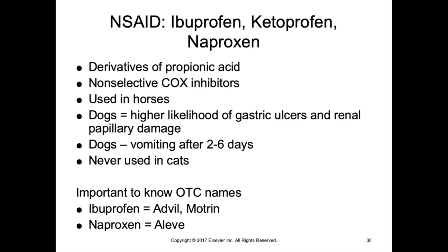Ibuprofen, ketoprofen, and naproxen are derivatives of propionic acid sharing common modes of action and side effects. Ketoprofen and naproxen are used in horses; however, the use of any propionic acid compounds in dogs has a very high incidence of gastritis and ulcers. Few adverse reactions are reported in horses, though gastric mucosal damage and renal papillary necrosis are possible. In contrast, after two to six days of treatment, dogs consistently experience vomiting. Because of these side effects and the availability of safer NSAIDs, propionic acid derivatives aren't usually recommended for dogs and definitely not for cats.